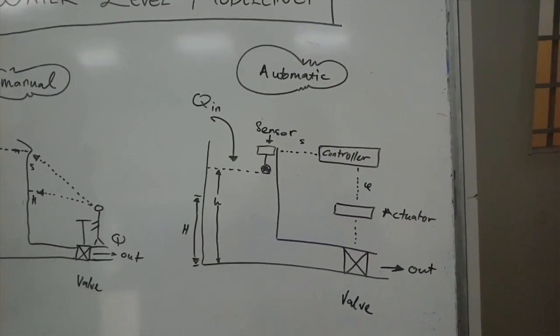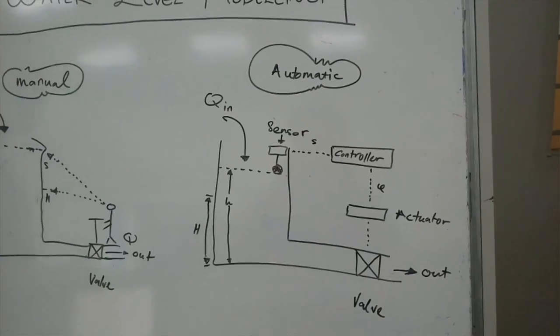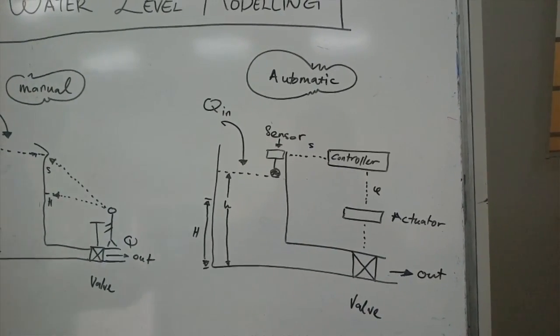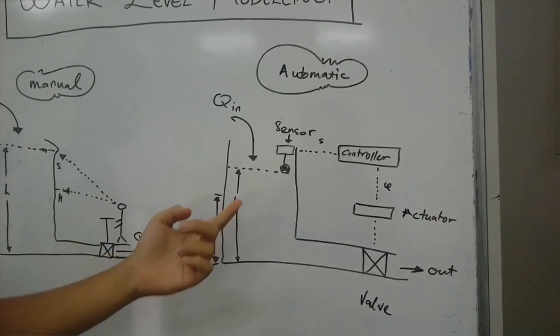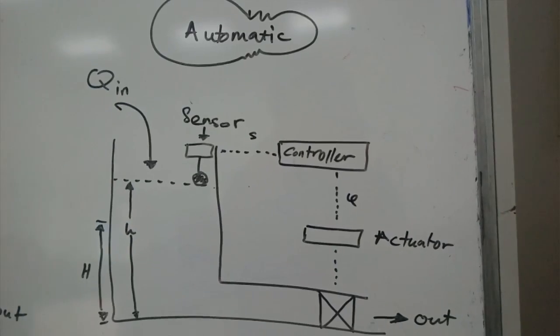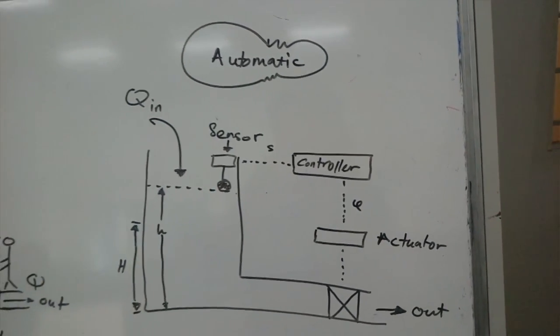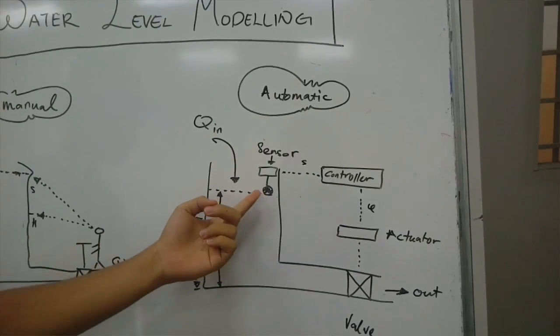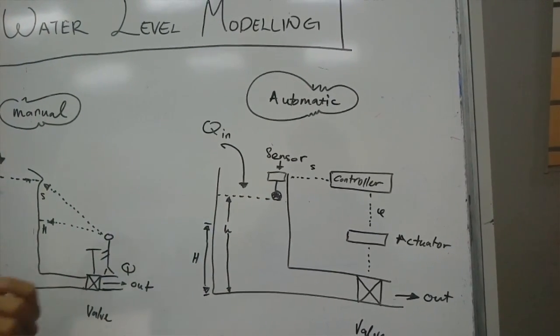Next, we go to the automatic method. In the automatic method, a woman is replaced by a controller to increase the accuracy. The liquid level is sensed by a fluid sensor. The sensed level is then fed to the controller.